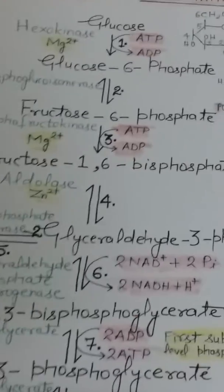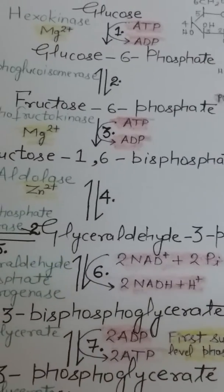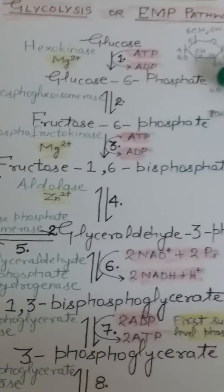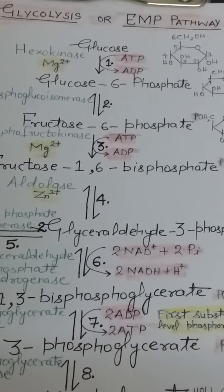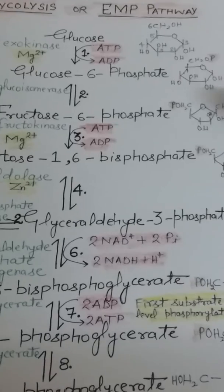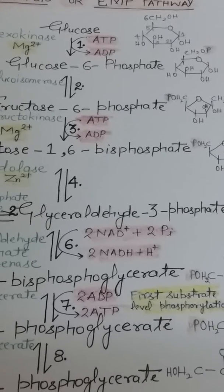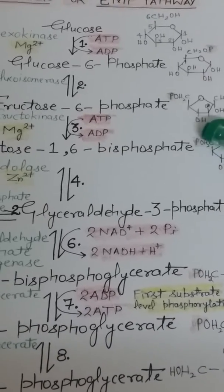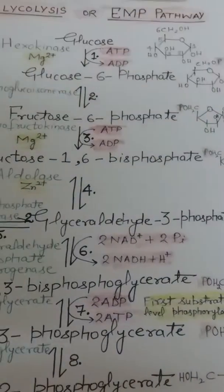The second step is isomerization. With the help of enzyme phosphoglucose isomerase, glucose-6-phosphate is converted into fructose-6-phosphate. This conversion is from an aldose to a ketose. This step is reversible and does not require energy.